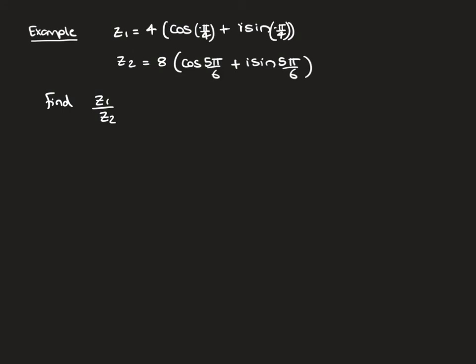Let's look at another example. Again we have a pair of complex numbers in modulus-argument form, and we're going to find z1/z2. Rather than performing complex division by realising the denominator, we simply find the modulus and argument of z1/z2. The modulus is |z1|/|z2| = 4/8 = 1/2.